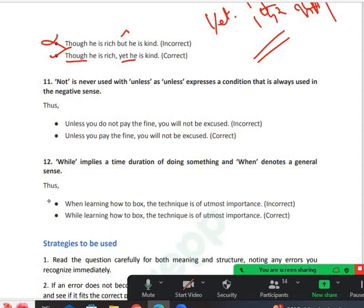'Not' is never used with 'unless', as 'unless' expresses a condition that is always used in the negative sense. For example: unless you do not pay the fine, you will not be excused - this is grammatically wrong. The correct form is: unless you pay the fine, you will not be excused. 'Not' doesn't come with 'unless'. Is it clear?